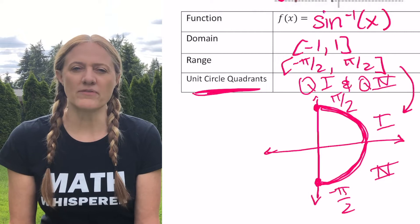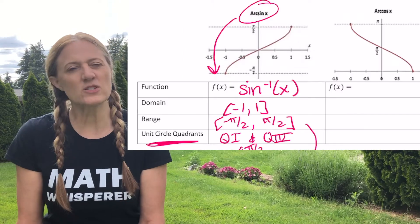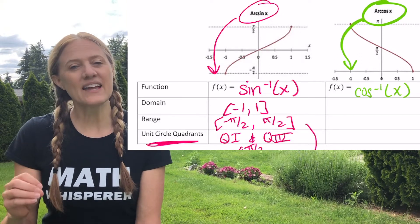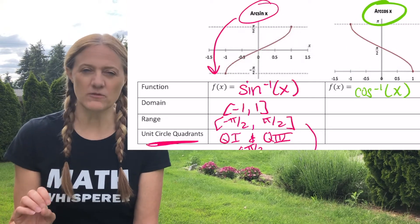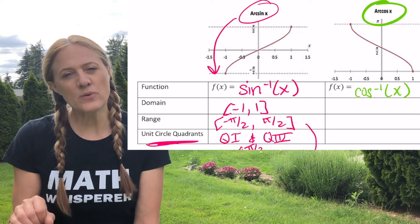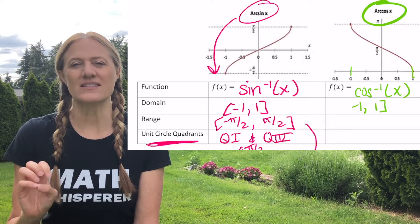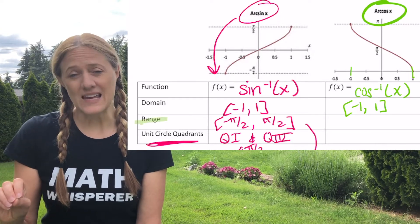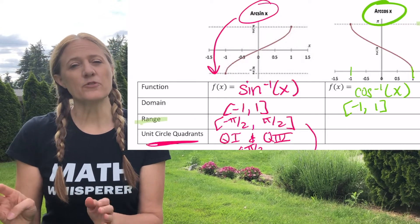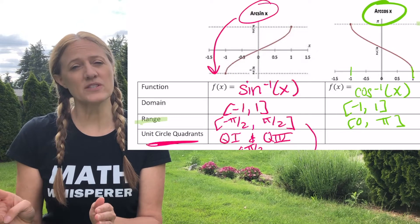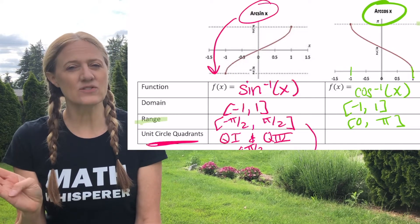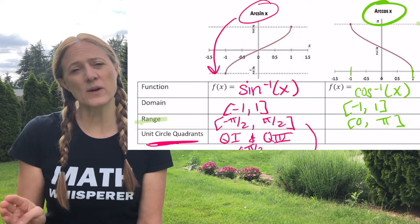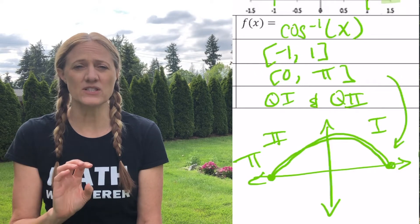Let's take a look at the graph of arc cosine. You'll notice it's a little bit different, but there are some similarities as well. Arc cosine uses the little negative 1 to indicate it's the inverse of cosine. The domain is the same as arc sine: negative 1 to 1 inclusive. However, for the range, we actually restrict it from 0 to pi inclusive. That allows us to have positive and negative cosine answers. Looking at the unit circle, where does that happen? Quadrant 1 and then quadrant 2.